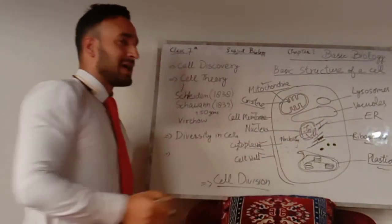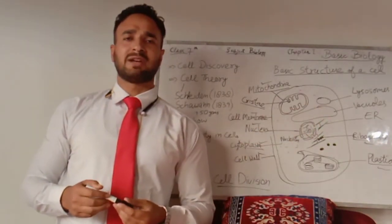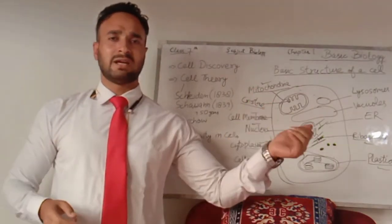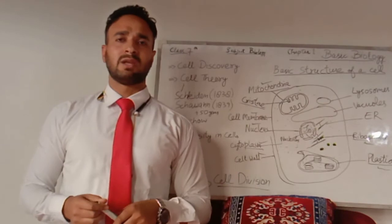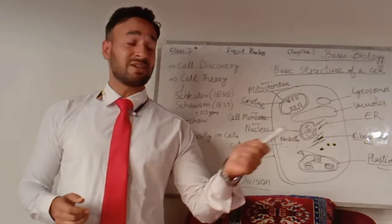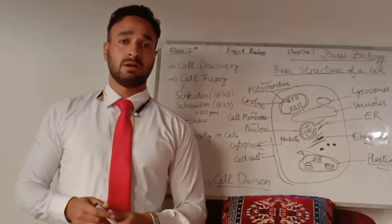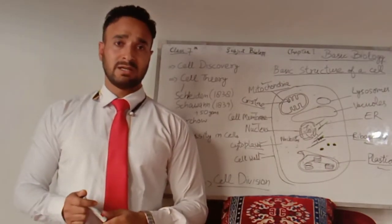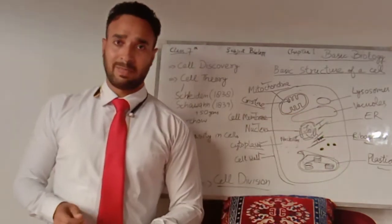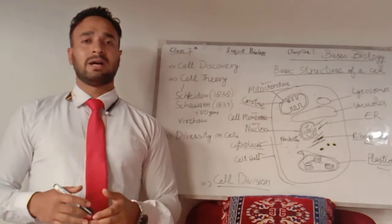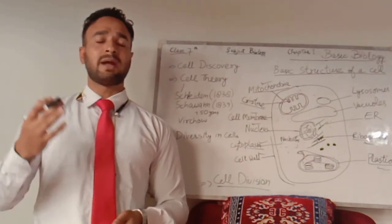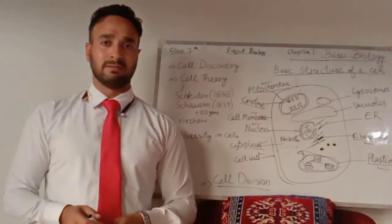One more organelle is the endoplasmic reticulum. One of its membranes is attached to the outer membrane of the nuclear membrane. The endoplasmic reticulum acts as a skeleton for the cell — it provides shape and support to the cell.